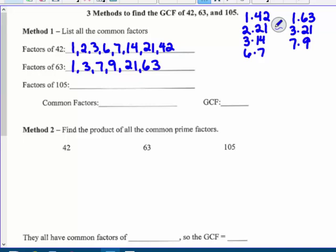And then 105. 1 and 105. 2 doesn't. 1 plus 0 plus 5 is 6. Oh, 3 works. 3 times 35. 5 times 21. 7 times 15. 8 won't work. 9 doesn't work. 10 doesn't work. 11, okay, I got them all.